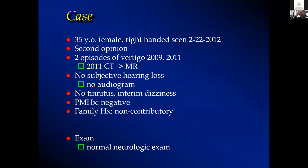Good morning. I'm going to start with the first case presentation this morning. This is something I observed, and others have observed in neurosurgery, related to posterior petrous face meningioma. It's a particular aspect of the anatomy of the audiovestibular apparatus which most neurosurgeons don't know or don't remember. Here's a case example: a 35-year-old woman seen back in 2012 for a second opinion who had suffered two episodes of true vertigo in the years prior.